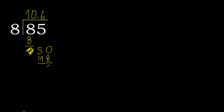50 minus 48 is 2. Complete — always complete with 0. 20. 8 multiplied by 3 is greater, so multiplied by 2 is 16.